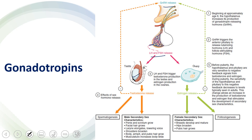FSH and LH work on the testis and ovary: testis releases testosterone and ovary releases estrogen. Testosterone has two important functions: on primary sexual organs it induces spermatogenesis, and on secondary sexual characteristics it promotes growth of the penis and scrotum, facial hair, larynx enlargement, lower voice pitch, broadened shoulders, and increased musculature. Estrogen works on primary sexual organs for folliculogenesis and secondary characteristics including breast development, broadened hips, and pubic hair growth.